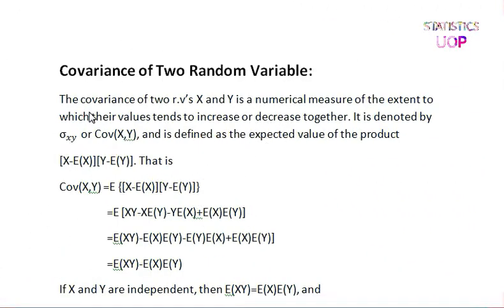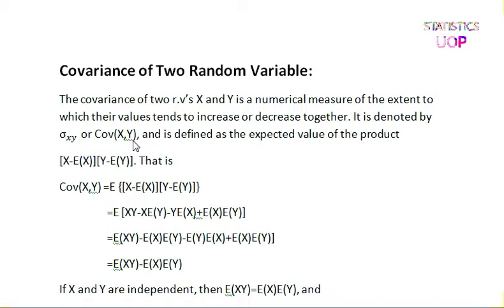As-salamu alaykum students, we are doing covariance of two random variables. The covariance of X and Y is a numerical measure of the extent to which their values tend to increase or decrease together. It is denoted by sigma X, Y or covariance of X and Y.